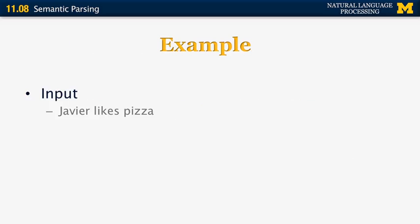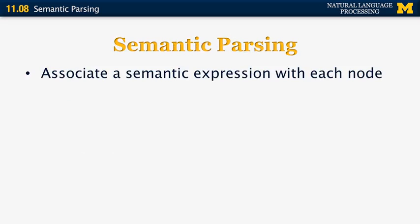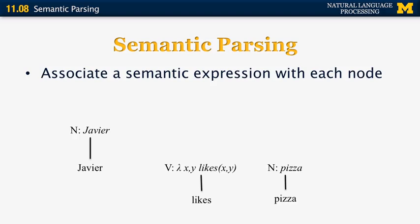Here's an example. The sentence is 'Javier likes pizza,' and what we want to produce as output is a predicate in first-order logic: likes(Javier, pizza), where Javier is the first argument and pizza is the second argument. We associate a semantic expression with each of the nodes — Javier, likes, and pizza are the leaf nodes, each represented as itself, and the verb is represented as a lambda expression.